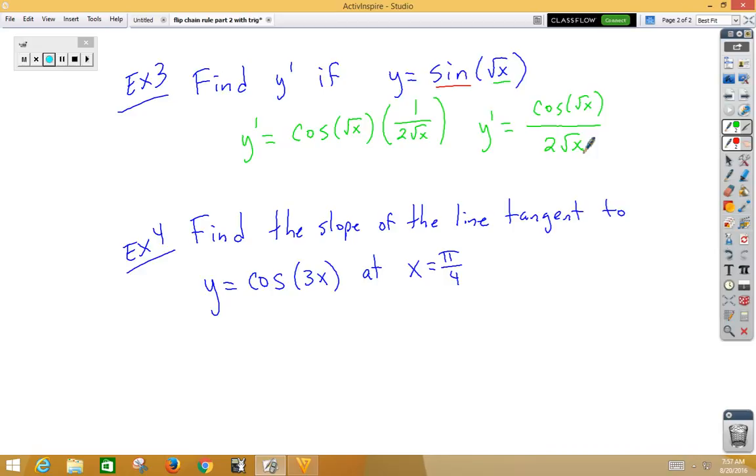In our last example, we want to find the slope of the line tangent to a function at x equals pi fourths. Remember vocabulary, the slope of the line tangent to, means take the derivative and plug in.